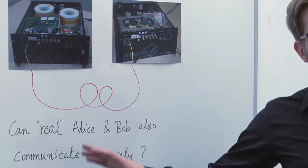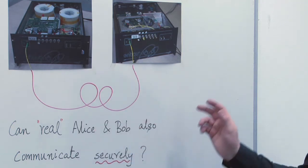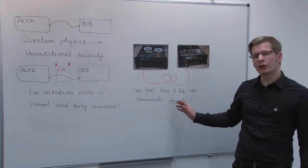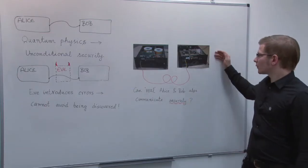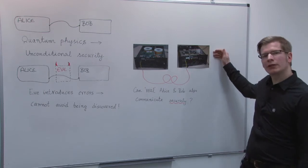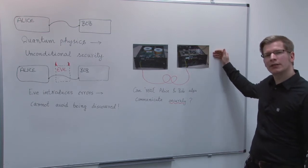In the next minutes, we'll ask the question, can real Alice and Bob communicate securely? And we'll show you that real device properties should be taken into account in the security proof. Otherwise, we'll get security problems.